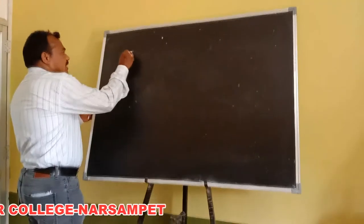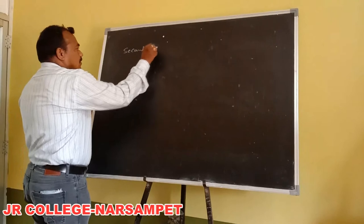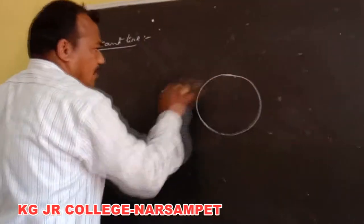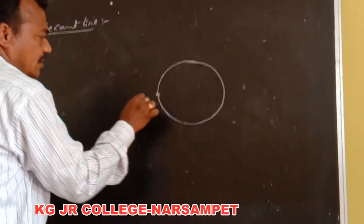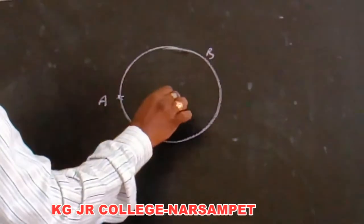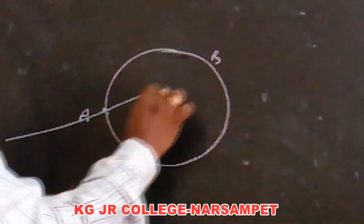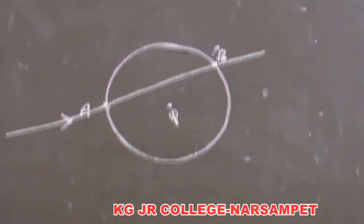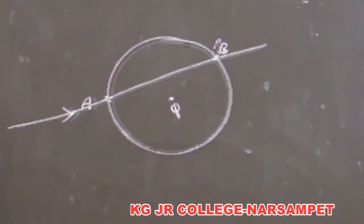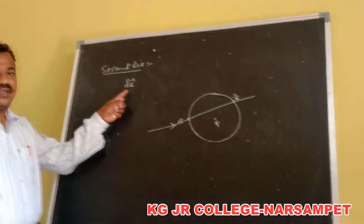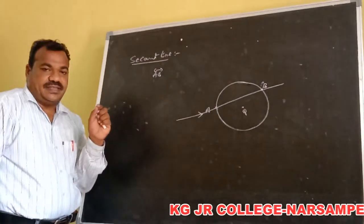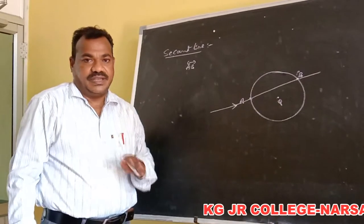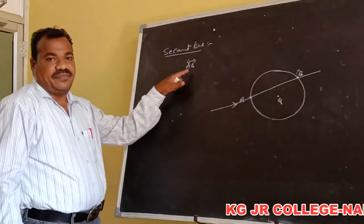So students, secant line. Suppose this is the circle. Here these are the two points on the circle. If a line cuts the circle at two points A and B, this is called the secant line. Secant line means if a straight line cuts the circle at two points, then the line segment AB is called the secant line.